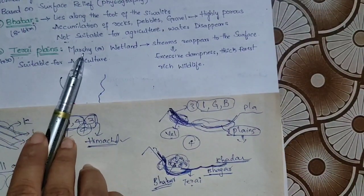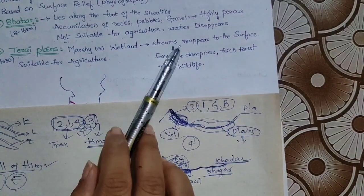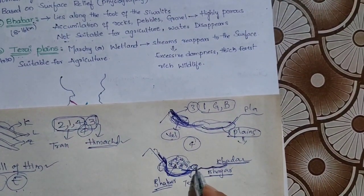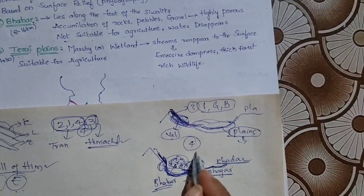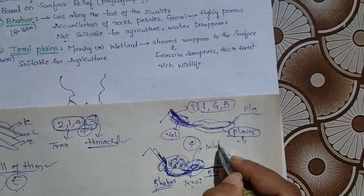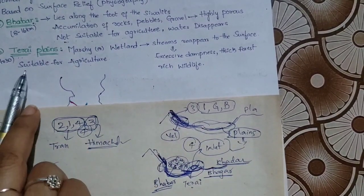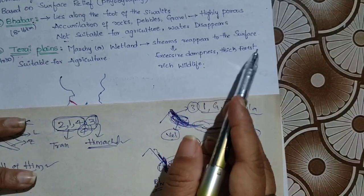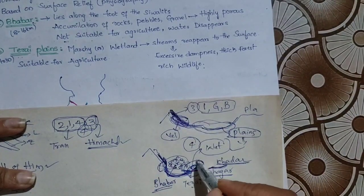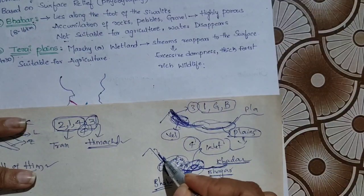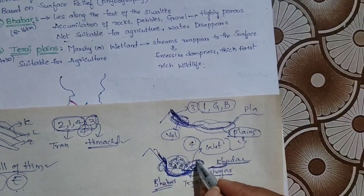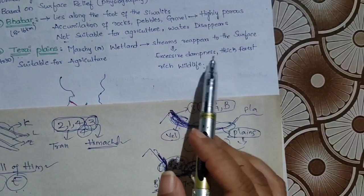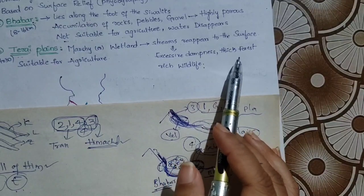Next, Terai plains — these are marshy or wetlands. The streams which disappear in the Bhabar zone will reappear here in the Terai. Because of this, the area is always wet and marshy. These are wetlands, suitable for agriculture. Due to moisture and dampness, thick forests can be seen here.